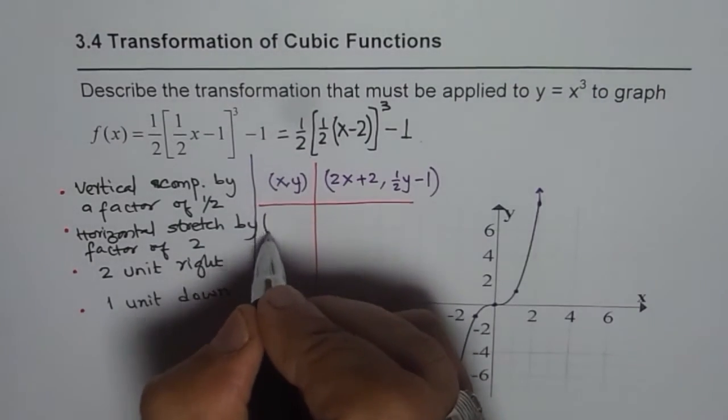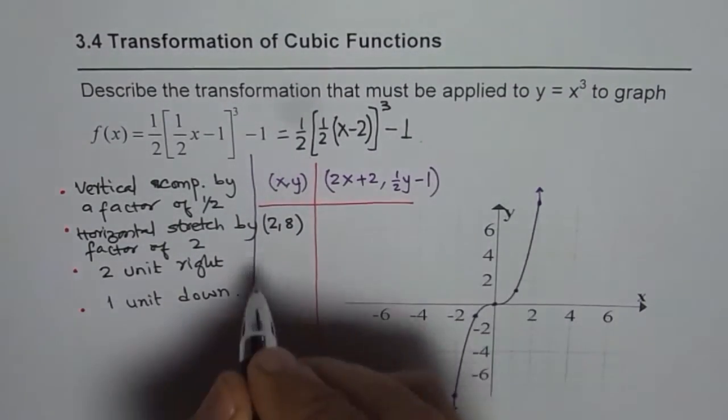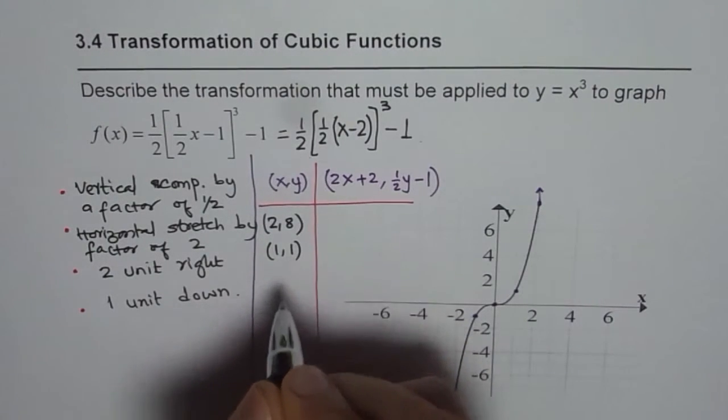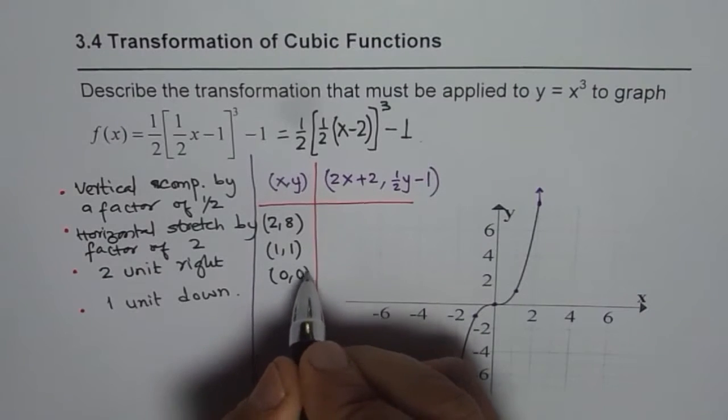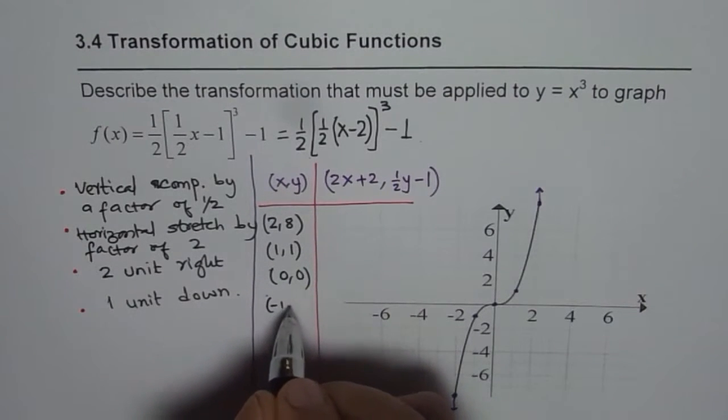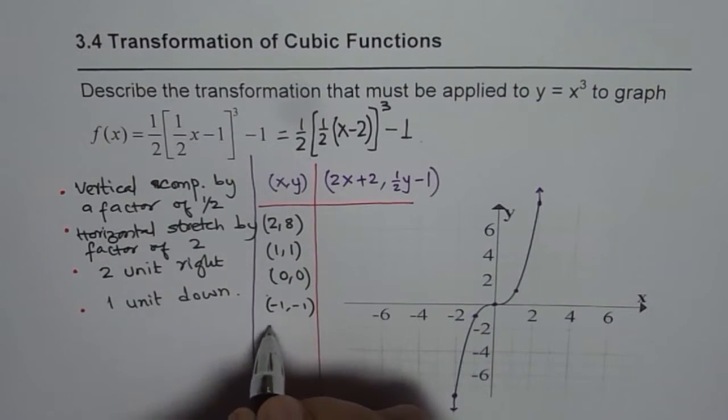Now let us write down all these points. So this is (2, 8) and then we have (1, 1). These are key points for a polynomial with degree 3, that is cubic. Minus 1, minus 1 and minus 2, minus 8.